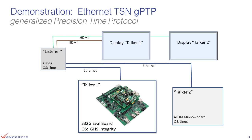In our first demonstration, we have a configuration with two talkers and one listener. The first talker is the S32G evaluation board running the GHS Integrity Operating System. The second talker is an Atom Mino board running Linux. Both talkers will generate pulses and transmit them over Ethernet to the listener, which is an x86-based PC running the Linux operating system. The listener will render for display the accumulation of pulses from each of the talkers.